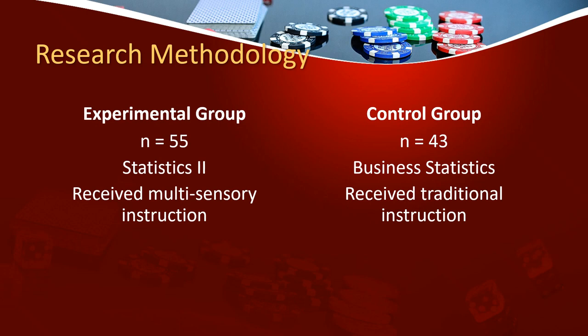The Statistics 2 group, which was the experimental group, received multisensory instruction, while the control group received traditional instruction. For the control group, I wrote all the probabilities down on the board — for example, what are the chances if you throw a dice to get one dot or three dots on the face of the dice. Meanwhile, the experimental group actually took out the cards, the dice, and the coins, came to the front, and could touch and interact with the objects.